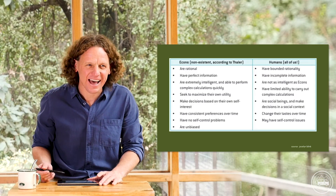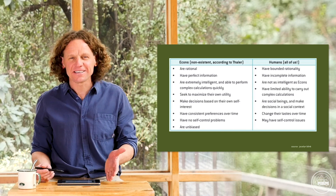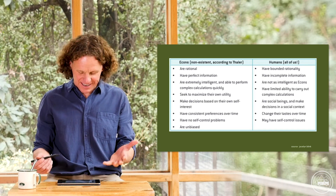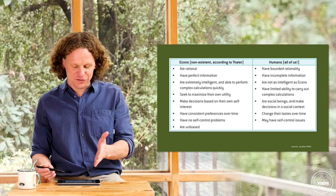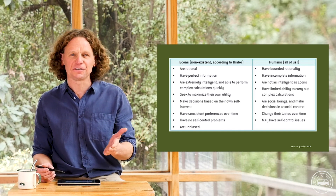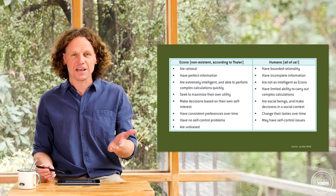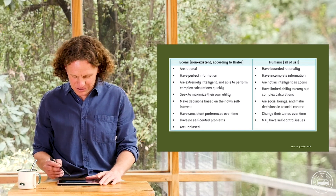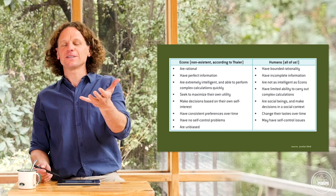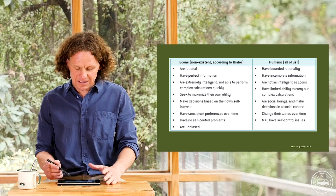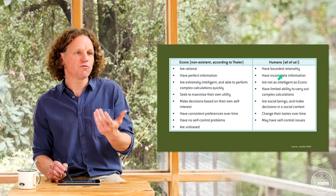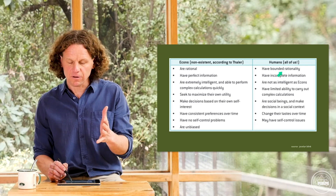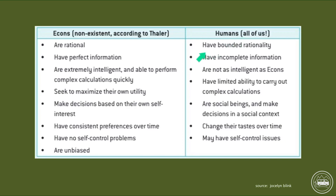That's how Thaler looks at econs — these homo economicus people — and he says that is just not the case. I'm taking this chart from Ian Dorton and Jocelyn Blink's excellent course companion, the 2020 third edition. Thank you Jocelyn and Ian for putting this together. The right-hand column is the way we need to think as we look at economic concepts through the lens of a behavioral economist. Thaler says that humans have something called bounded rationality, which we'll discuss in a moment.